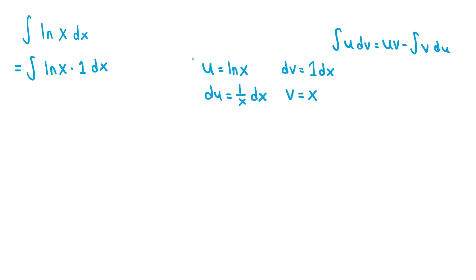So we can see that the integral of ln(x) times 1 dx is just the integral of u dv on the left hand side of the integration by parts formula, and this is just equal to uv minus the integral of v du. uv is just equal to ln(x) times x, since u is equal to ln(x) and v is equal to x.